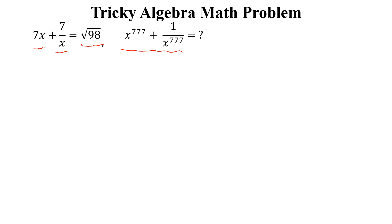How can we solve this? First we take 7 common, so x plus 1 over x equal to square root of 98, dividing both sides by 7. So x plus 1 over x equal to square root of 98 divide by 7.